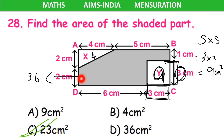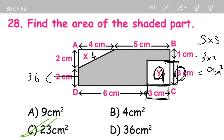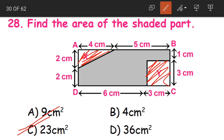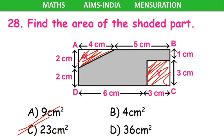To find out the area of the shaded figure, we found out the area of the total rectangle. And from that we subtracted the area of triangle and the area of the square. Our answer is option C, 23 centimeter square.